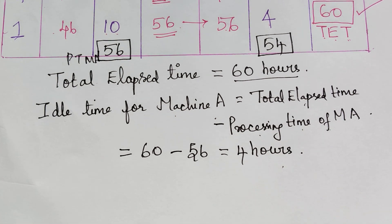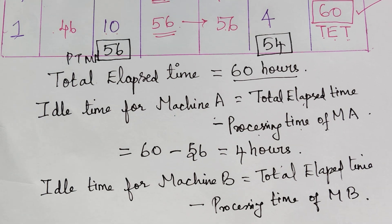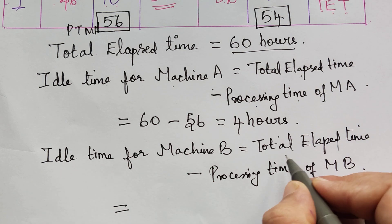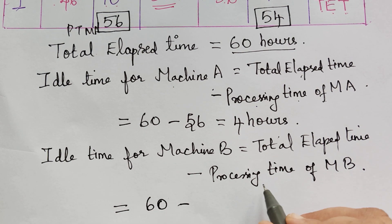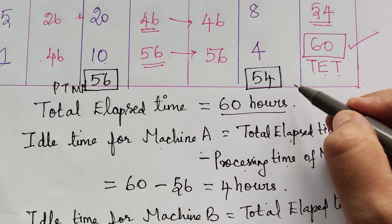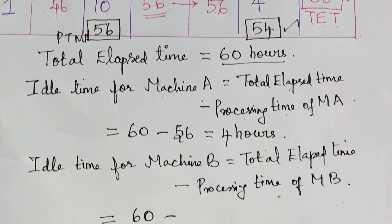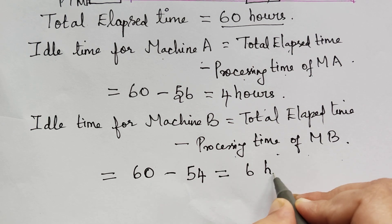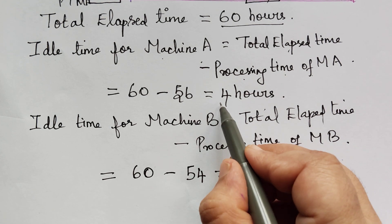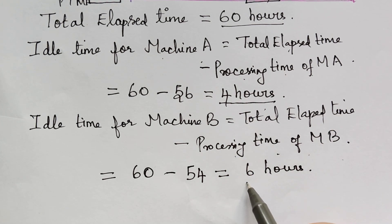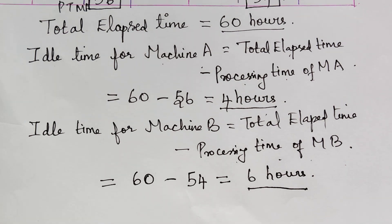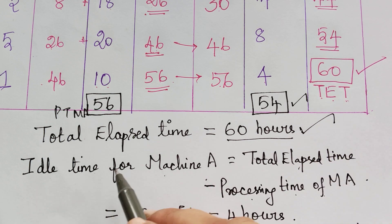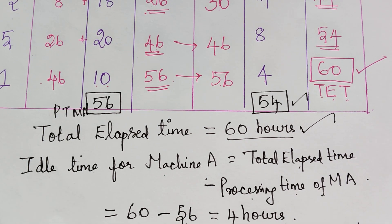Similarly, idle time for machine B equals total elapsed time minus total processing time of machine B. Adding processing times for machine B: 12 plus 16 plus 14 plus 8 plus 4 equals 54. So idle time for machine B equals 60 minus 54, which equals 6 hours. Therefore machine A remains idle for 4 hours and machine B remains idle for 6 hours. The total time taken to complete all jobs in the two machines is 60 hours, which is the total elapsed time.